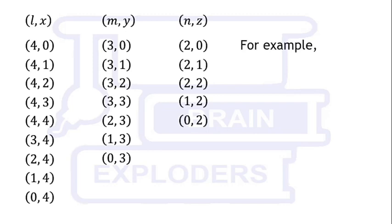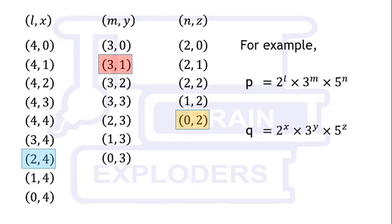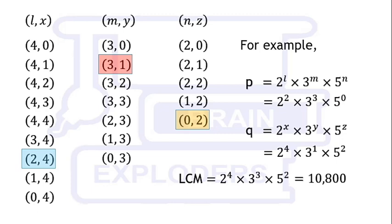For example, let us select (2,4), (3,1), and (0,2). Put the values of these pairs in p and q and find their LCM. You will get 10,800.